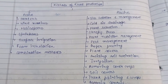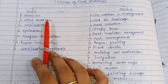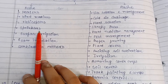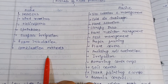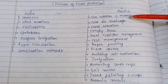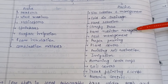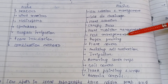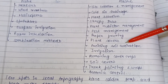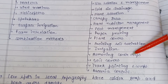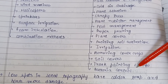This chart summarizes the methods of frost protection. Active protection methods include heaters, wind machines, helicopters, sprinklers, surface irrigation, foam insulation, and combination methods. Passive methods include site selection and management, cold air drainage, plant selection, canopy trees, plant nutrition management, pest management, proper pruning, plant covers, avoiding soil cultivation, irrigation, removing cover crops, soil covers, trunk painting and wraps, and bacteria control.